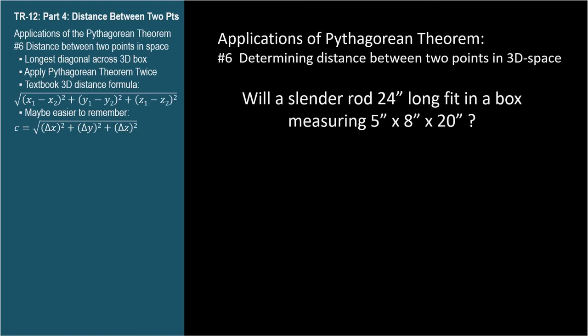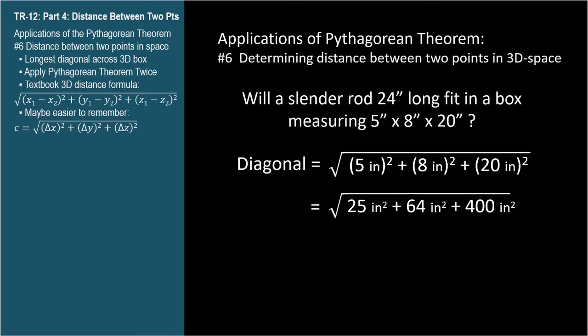All of our deltas are simply the measurements of the box. So the equation for the diagonal becomes square root of quantity 5 inches squared plus 8 inches squared plus 20 inches squared. This is the square root of 25 square inches plus 64 square inches plus 400 square inches. The square root of the sum, 489 square inches, is 22.1 inches.